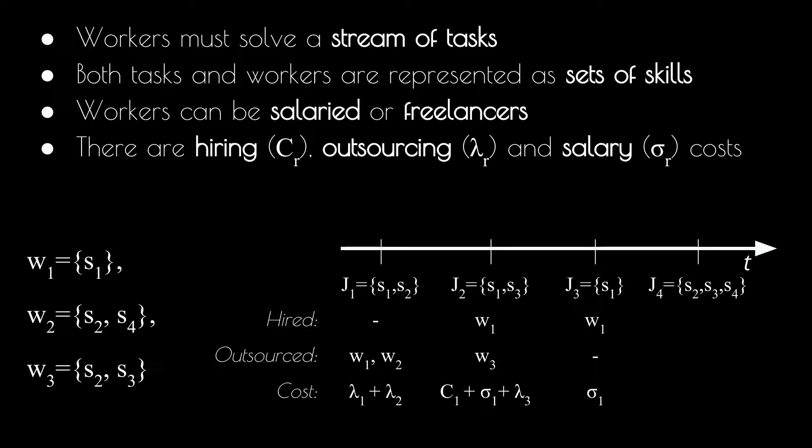Finally, when the fourth task arrives, we decide to outsource again, and we let go worker 1.